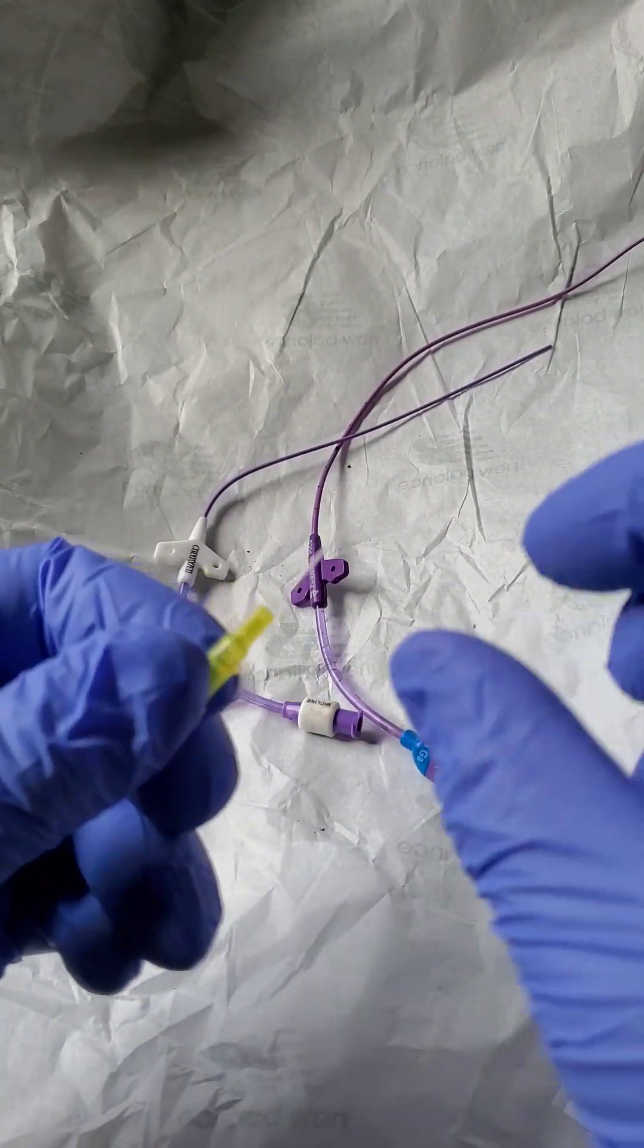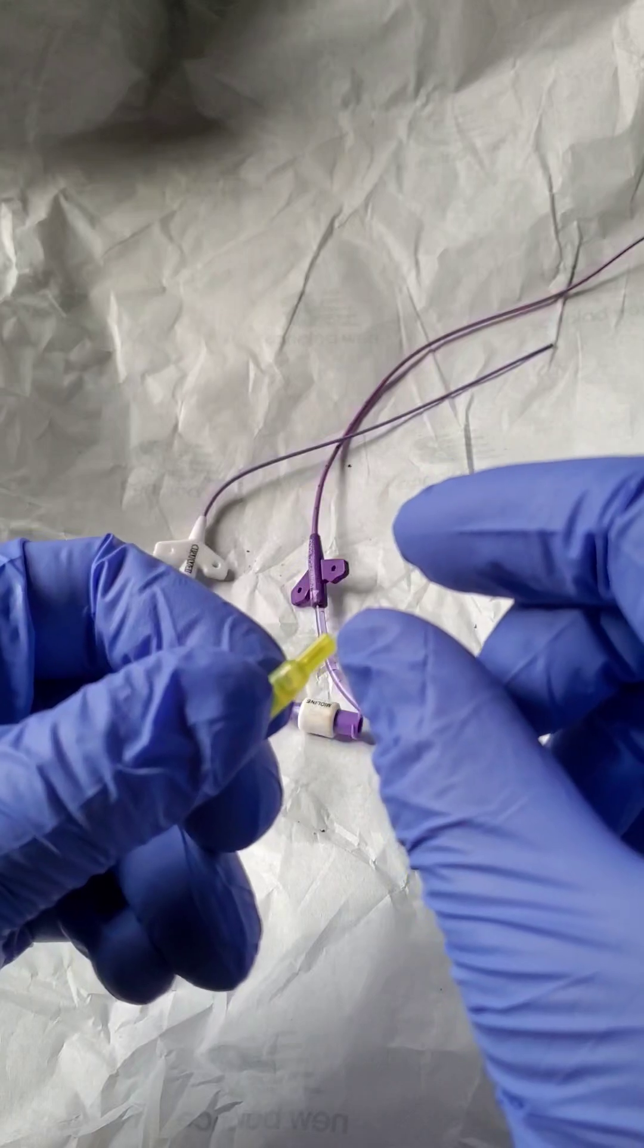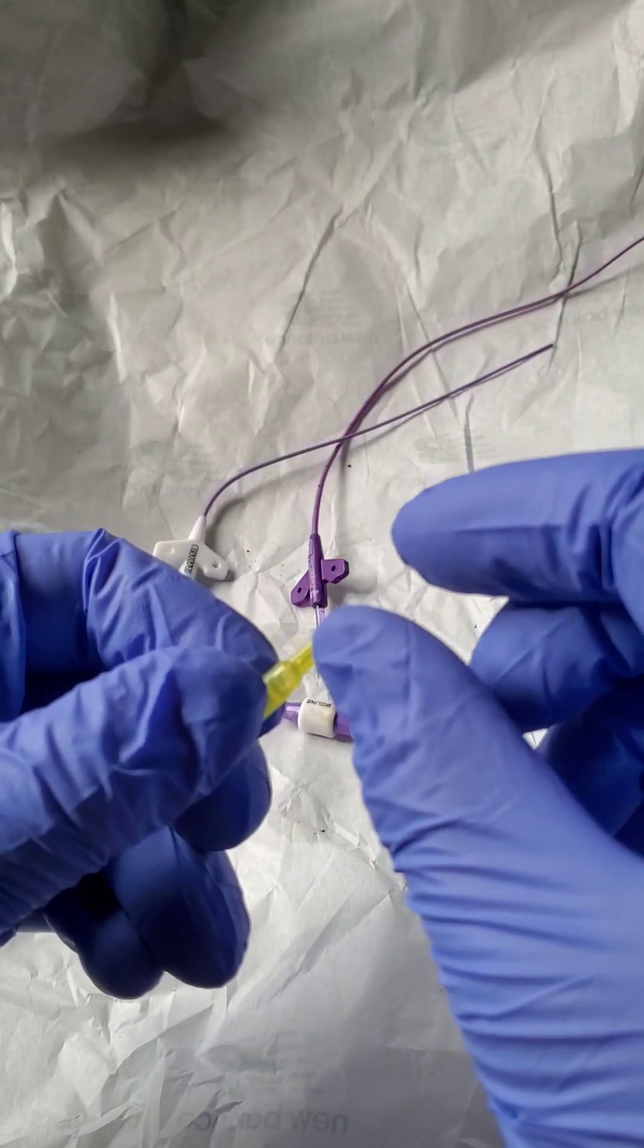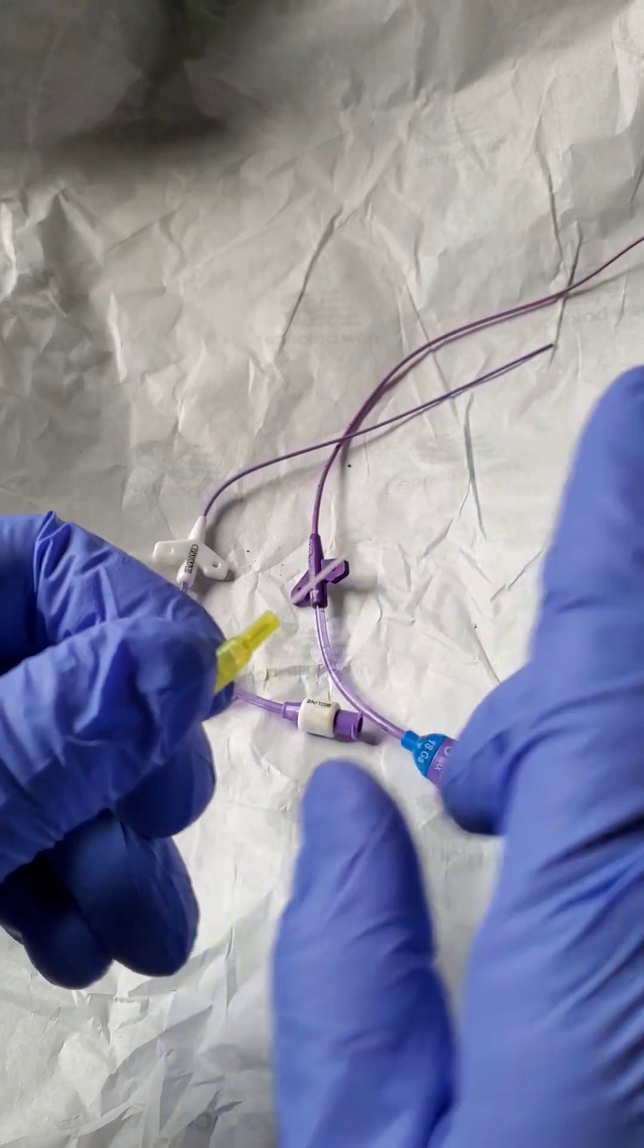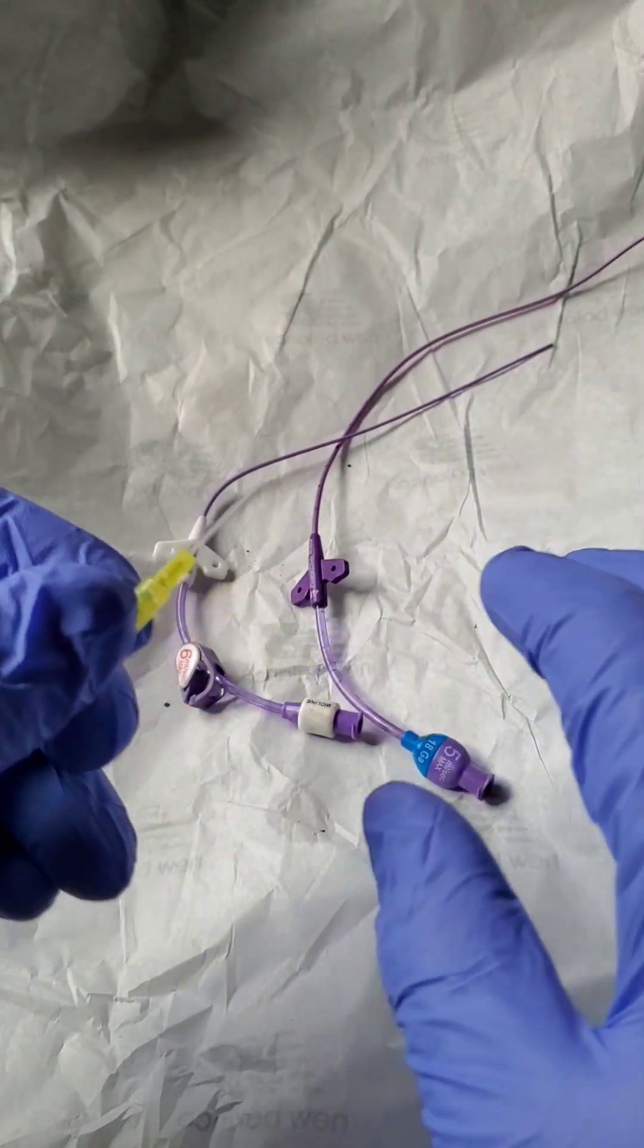The IV catheter, you are probably familiar with this, is relatively short, about half an inch to three quarters of an inch. It simply provides access to the vein so that we can introduce medication or saline.